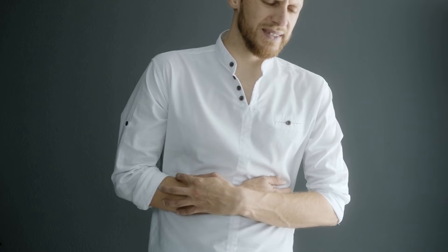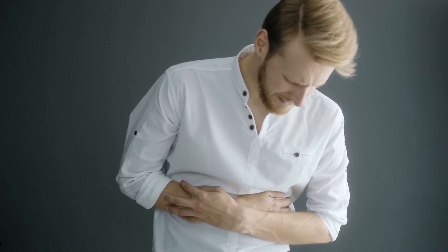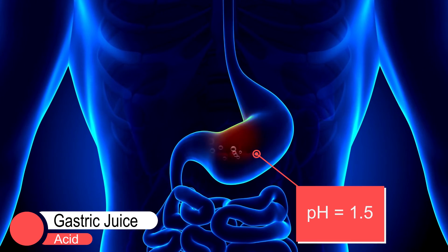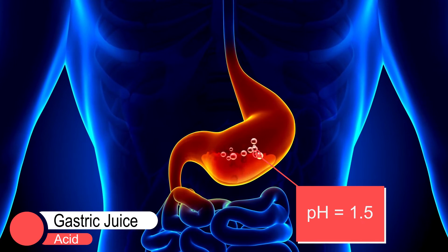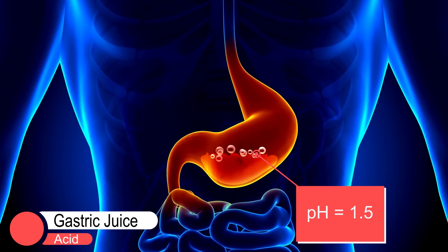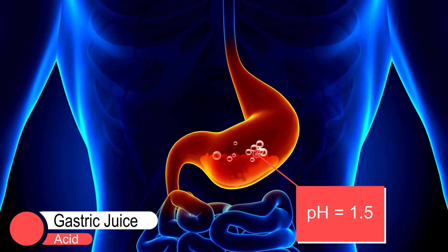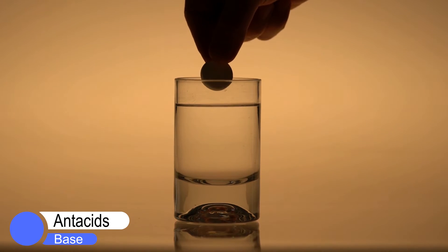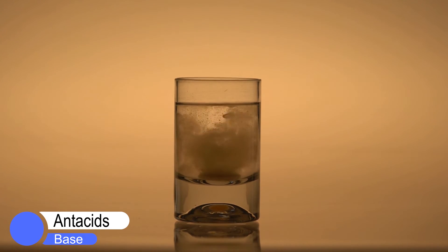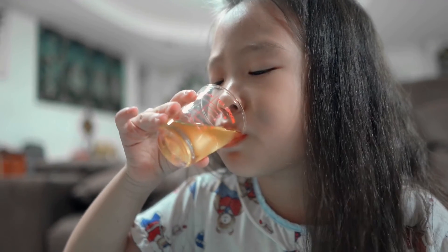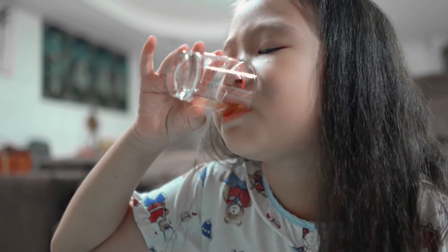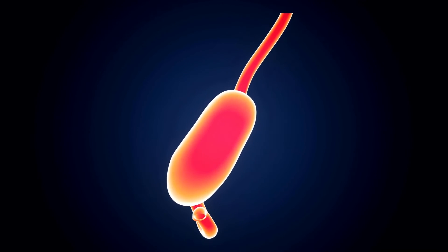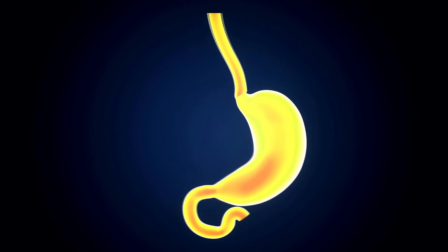An example of neutralization is how we treat hyperacidity. The gastric juice in our stomach has a pH of about 1.5. When someone has hyperacidity, the excessive high acidity can cause inflammation and discomfort in the stomach membrane. Antacids are usually prescribed to reduce the concentration of hydrogen ions in the stomach. Antacids contain active ingredients such as magnesium hydroxide, which acts as a base to neutralize the excess hydrochloric acid in the gastric juice.